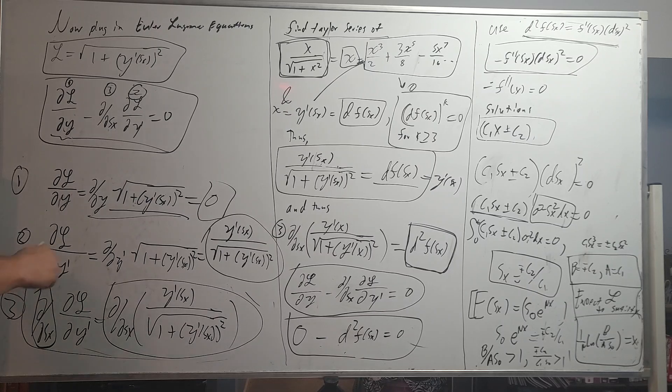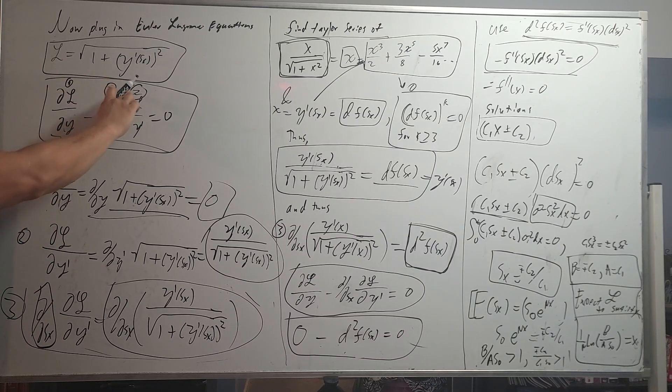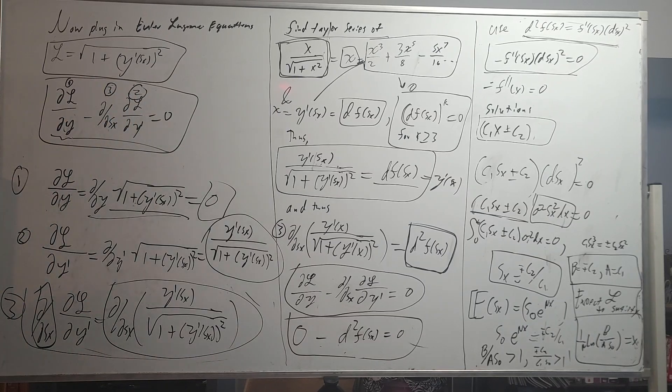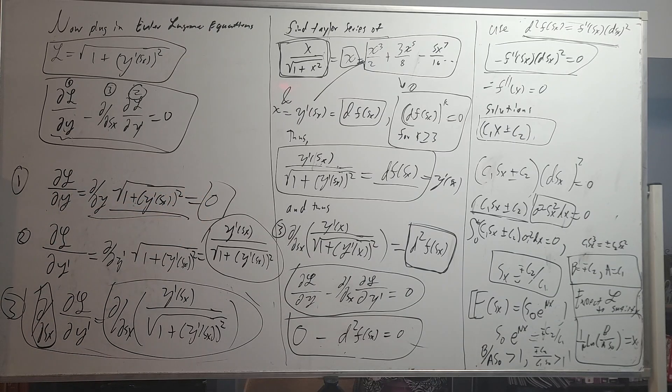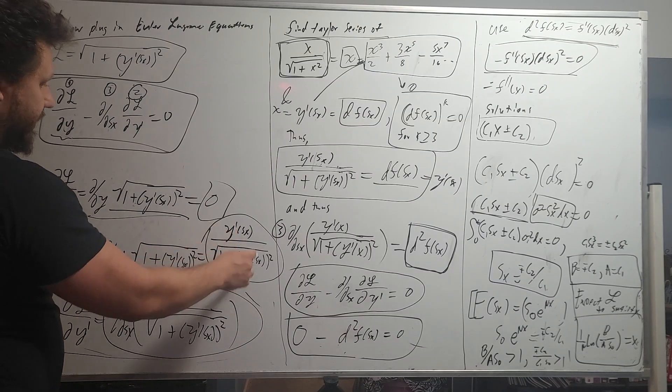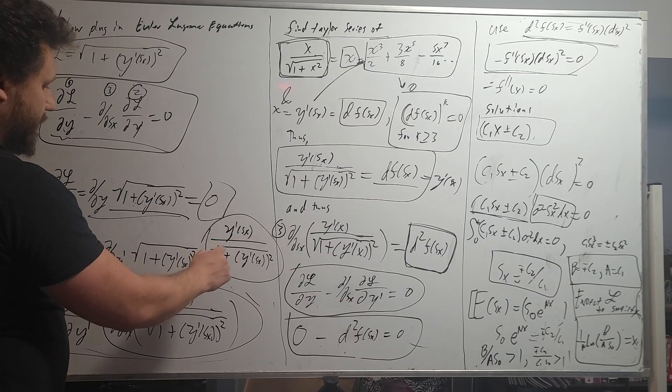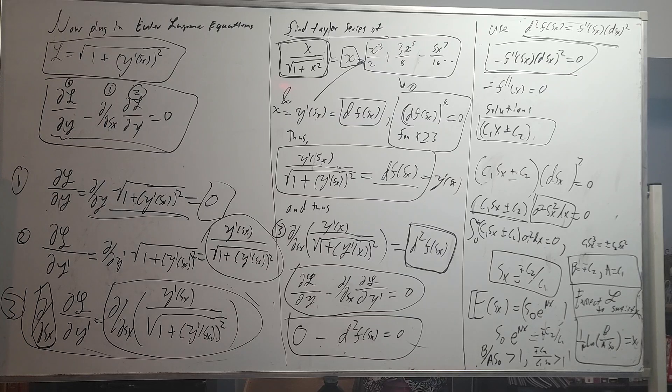So now we plug into the Euler-Lagrange equations, our stochastic Lagrangian. We've sectioned them off. This is the first one, this is the second one, this is the third one. The first one is very easy. We take the derivative of the Lagrangian with respect to y, and we see that there is no y at all, so this goes to 0. The next one is that we take the derivative of Lagrangian with respect to this y prime of sx. And as you can see, this becomes this right here: y prime sx divided by square root 1 plus y prime sx squared.